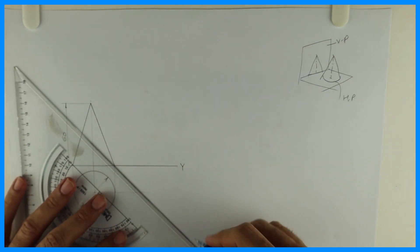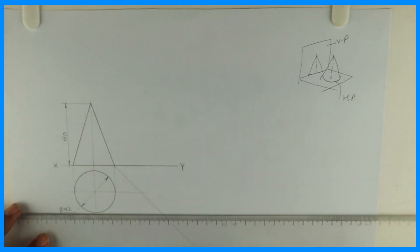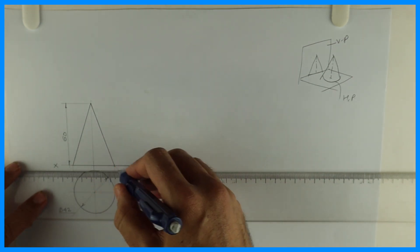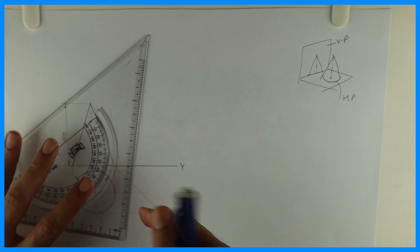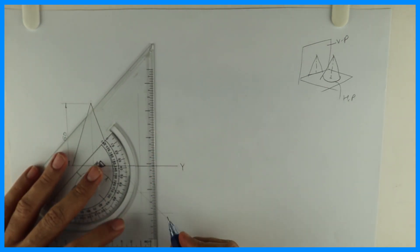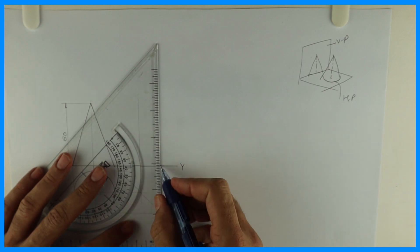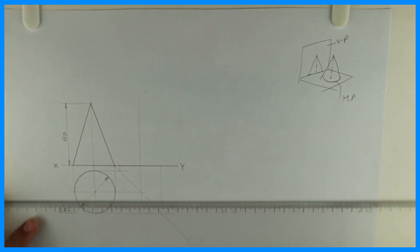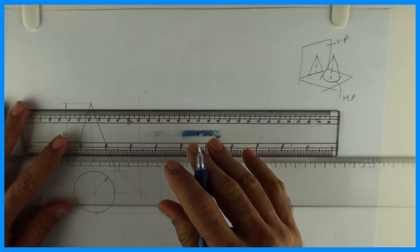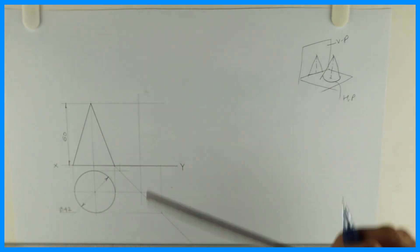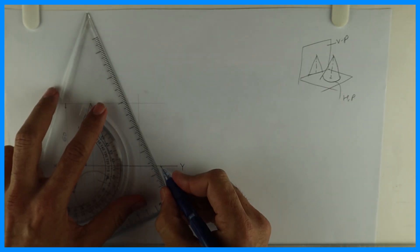Then we will draw side view. For side view we will take 45 degree. We will extend the height, see like this, and we will extend this extreme top and bottom surface also. So in side view also you will see triangle. So we are done with front view, top view and side view.